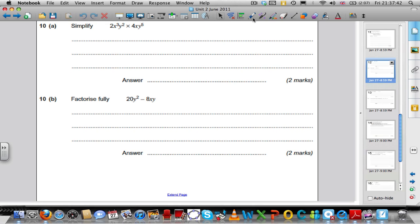Moving on to question 10. What we're doing here is we're manipulating some algebraic expressions. Simplify 2X cubed Y squared times 4XY to the power of 5. The X is obviously to the power of 1. You can do the numbers multiplied by each other separately. 2 times 4 is 8. X cubed times X to the 1. If the base numbers are the same, you can add the indices. That's X to the power of 4. Y squared times Y to the 5 is Y to the 7. So, 8X to the 4, Y to the 7.